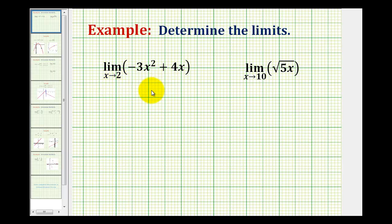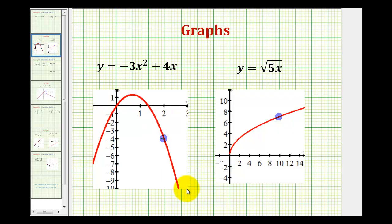To emphasize this idea, let's take a look at the graph of this function. Here's our polynomial function. And again, notice as we approach positive two from the left and from the right, we are approaching this point on the function, and this function value would be our limit. So we can just determine f of two.